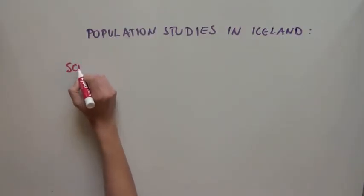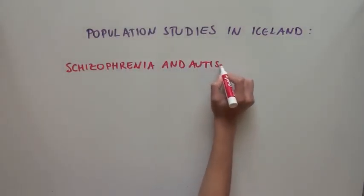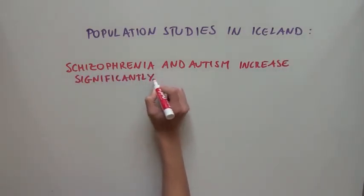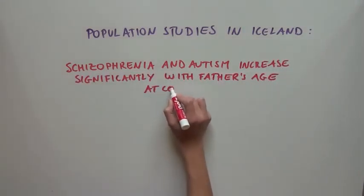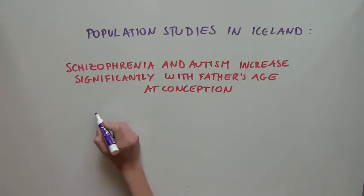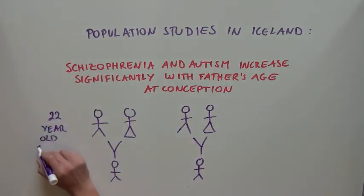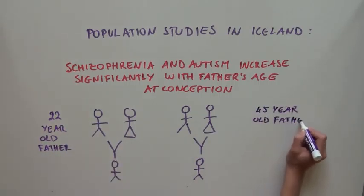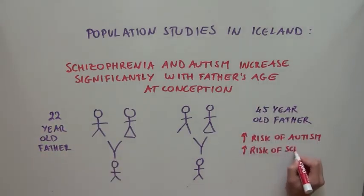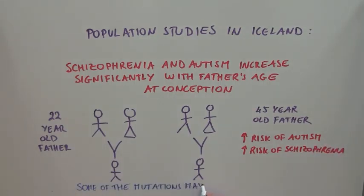Population studies in Iceland have shown that schizophrenia and autism increase significantly with father's age at conception. This is in line with the results of this finding, showing that fathers transmit more mutations to their children with increasing age at the time of conception. So this suggests that at least some of the mutations that are transmitted from father to child may be detrimental, and may increase the risk of autism and schizophrenia.